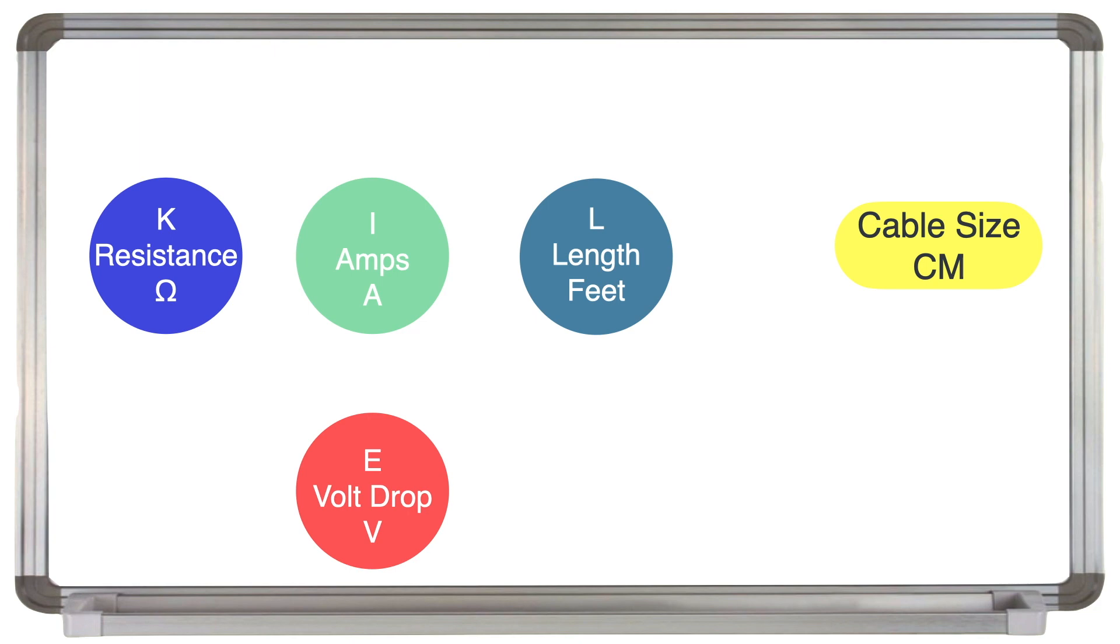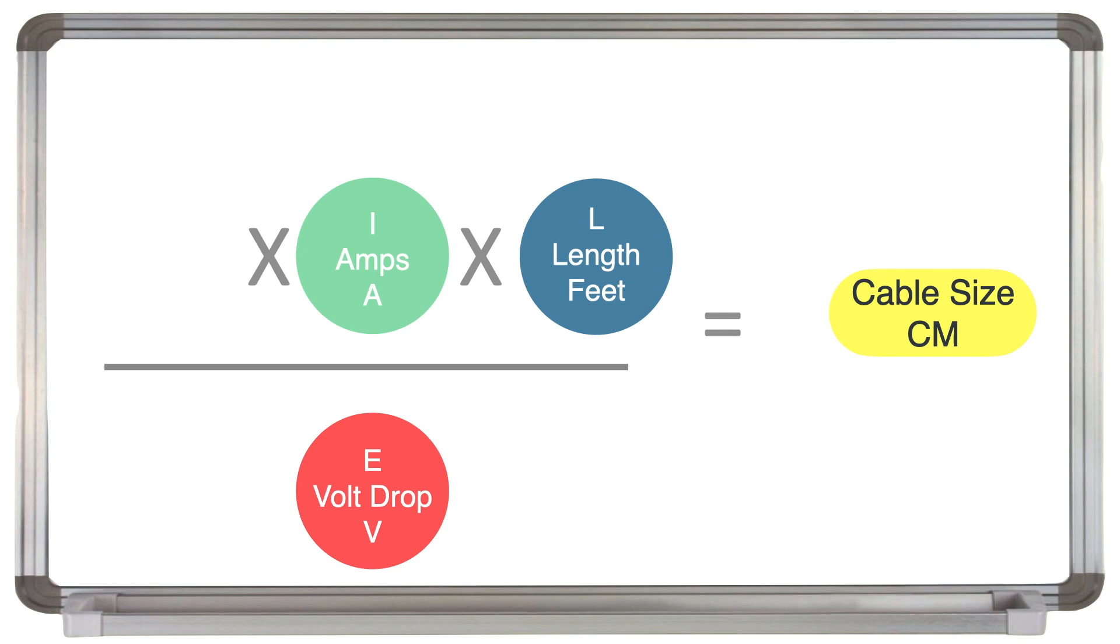And CM is the cable size in circular mils. So we can work out the cable size by multiplying K by the current and then by the length of both the positive and negative conductors in feet. Then we divide this by your acceptable voltage drop. So let's do an example.